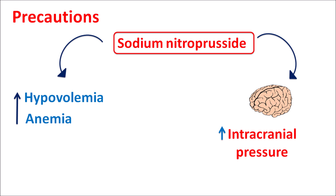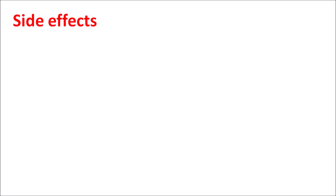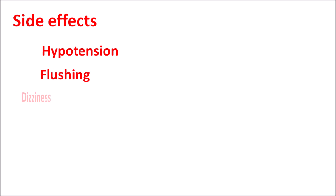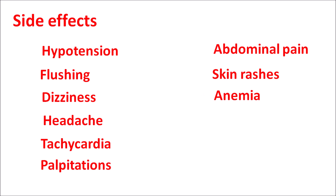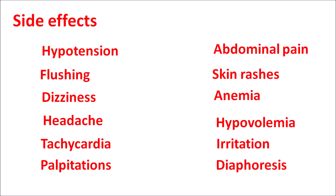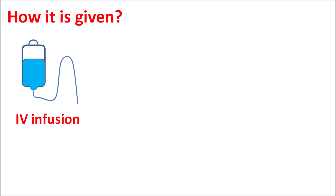The important side effects of sodium nitroprusside include hypotension, flushing, dizziness, headache, tachycardia, palpitations, abdominal pain, skin rashes, anemia, hypovolemia, irritation at the site of injection, and diaphoresis.